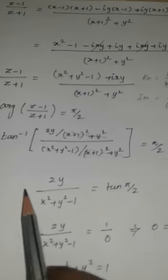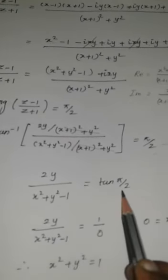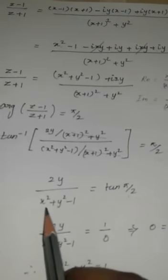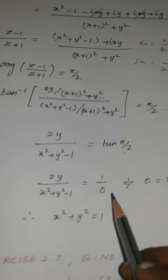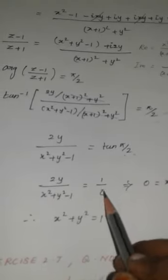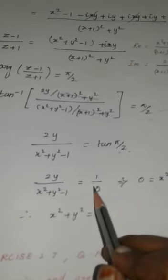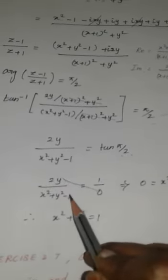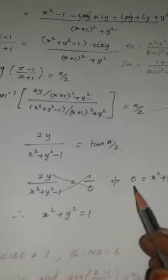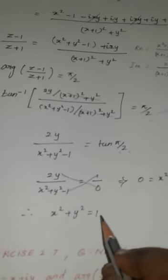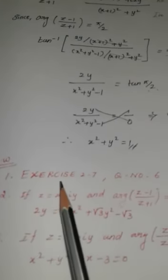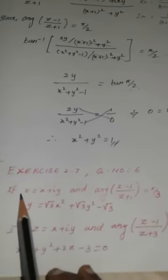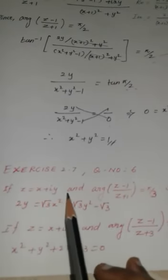This means tan⁻¹(2y / (x² + y² − 1)) = π/2. Moving tan to the other side: tan(π/2) = 2y/(x² + y² − 1). Since tan(π/2) = ∞ = 1/0, the denominator must be zero. Therefore 0 = x² + y² − 1, giving us x² + y² = 1.